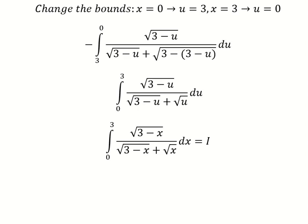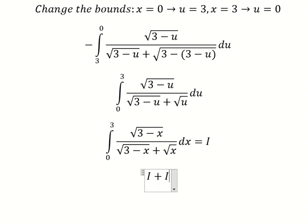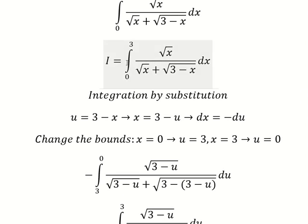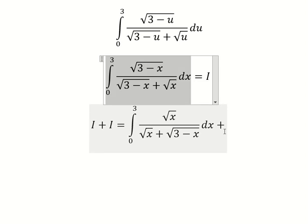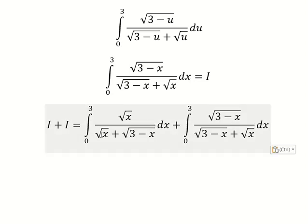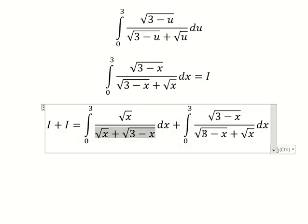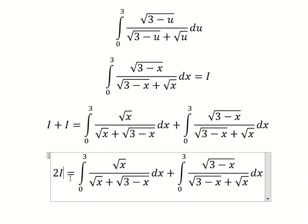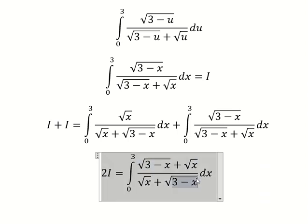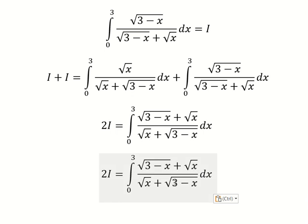Next, we add I plus I. We can see they have the same common denominator, so we can simplify. The numerators add up to give us 1.